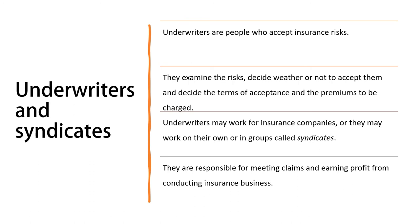Other parties involved in the insurance procedure are called underwriters. Underwriters are people who accept insurance risk. They examine the risk, decide whether or not to accept it, and decide the terms of acceptance and the premiums to be charged. Underwriters may work for insurance companies, or they may work on their own, in groups, or in syndicates. They are responsible for meeting claims and earning profit from conducting insurance business.